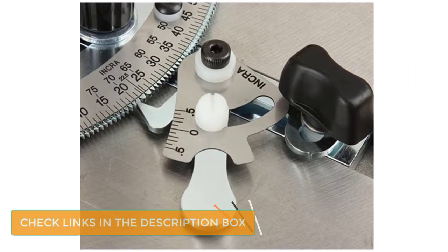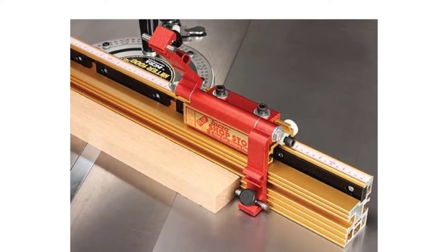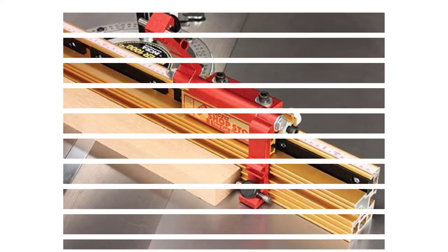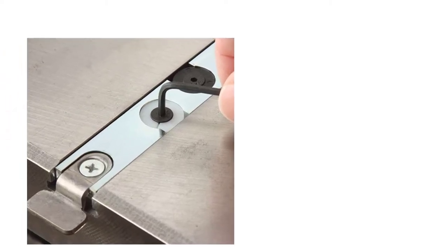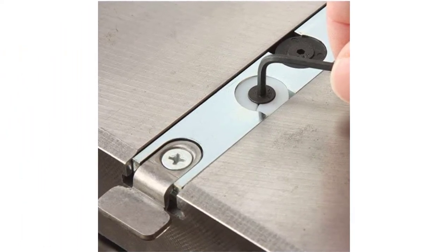Like the miter gauge discussed above, the 1000HD is compatible with table saws with standard miter slot sizes: 3/8 inches deep, 3/4 inches wide. The telescoping fence included with this miter gauge can be extended from 18 inches to 31 inches. This miter gauge from Inkra is sure to improve the quality of your miter cuts.